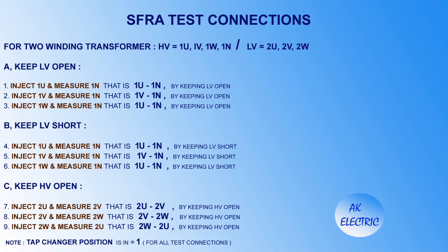For SFRA test connections on a two-winding transformer: with LV open, test 1U to 1N, 1V to 1N, and 1W to 1N. With LV shorted, test 1U to 1N, 1V to 1N, and 1W to 1N. Also with HV open, test 2U to 2V, 2V to 2W, and 2W to 2U. That gives a total of nine major connections. The tap changer position should be at one for all test connections.